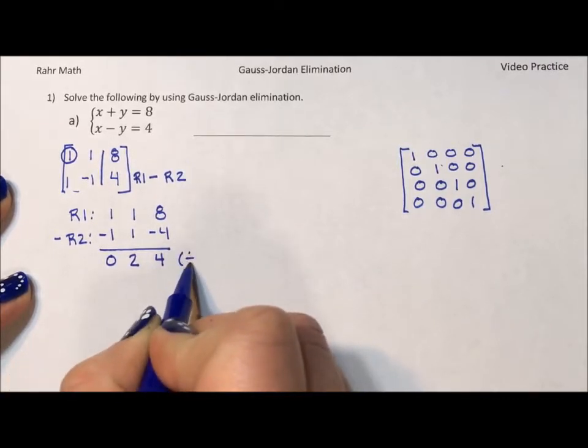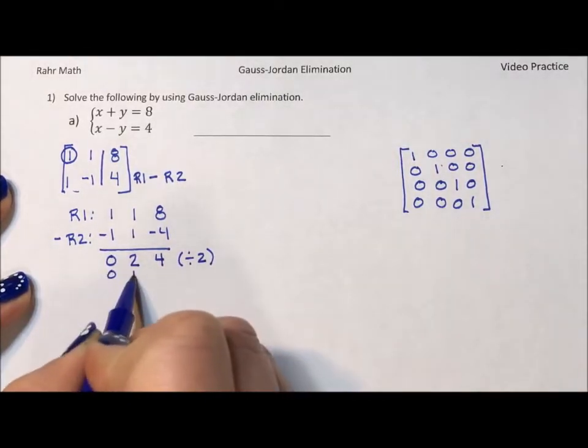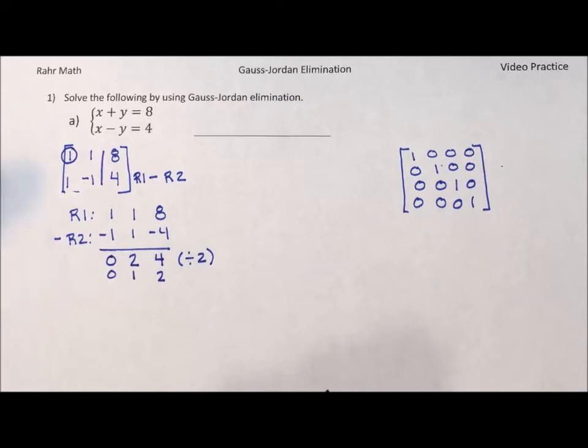The next thing I'm going to do is I'm just going to divide those three numbers by two. So I have a zero, one, and a two, because that's going to save me a step in my matrix.